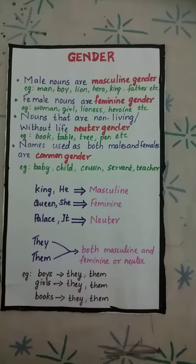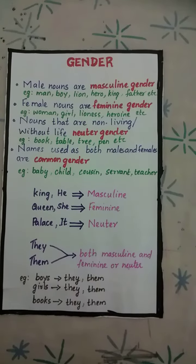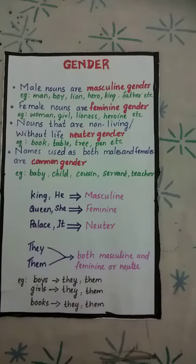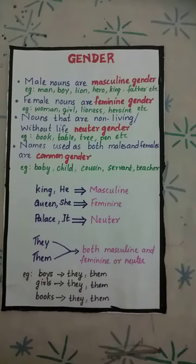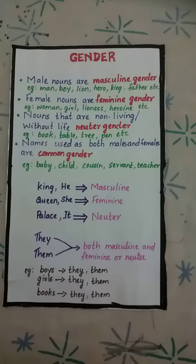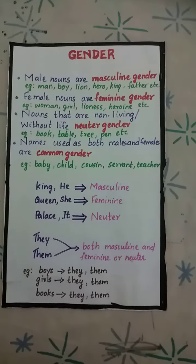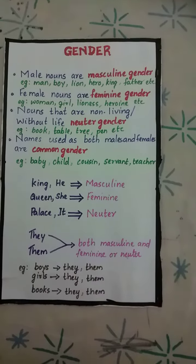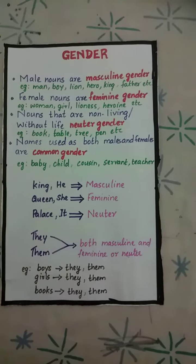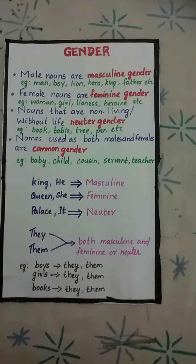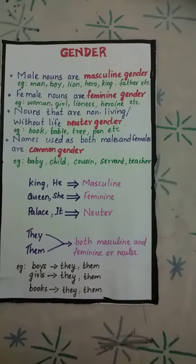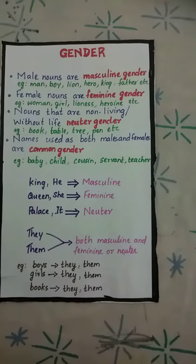Nouns that are non-living things without life, they come under neuter gender. Examples: book, table, tree, pen.